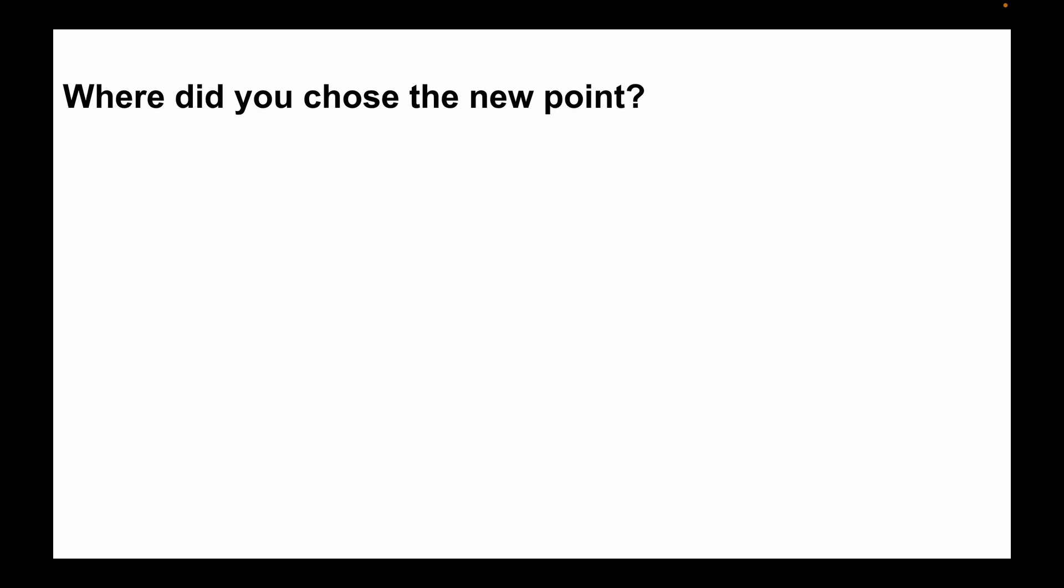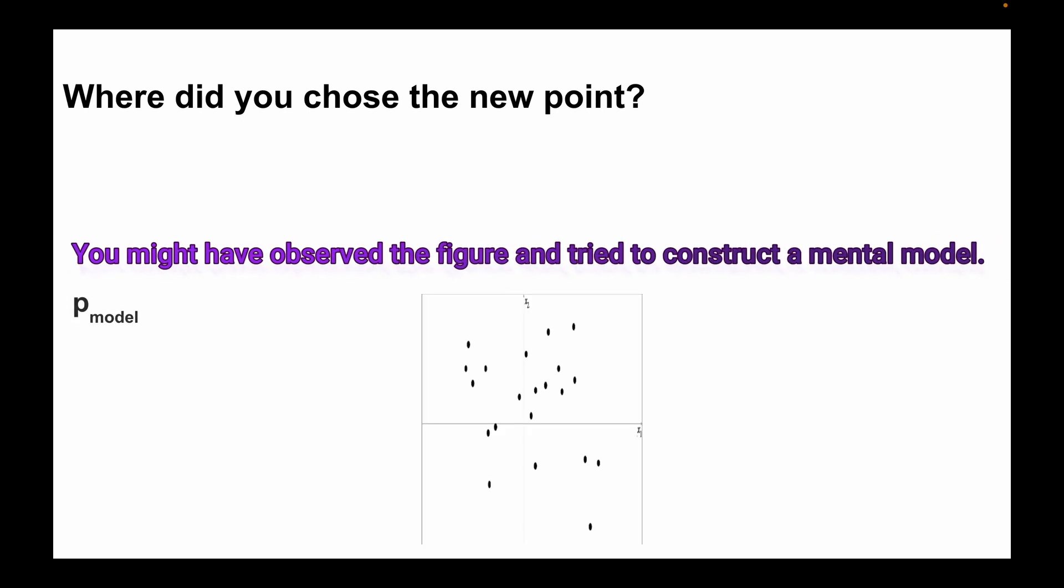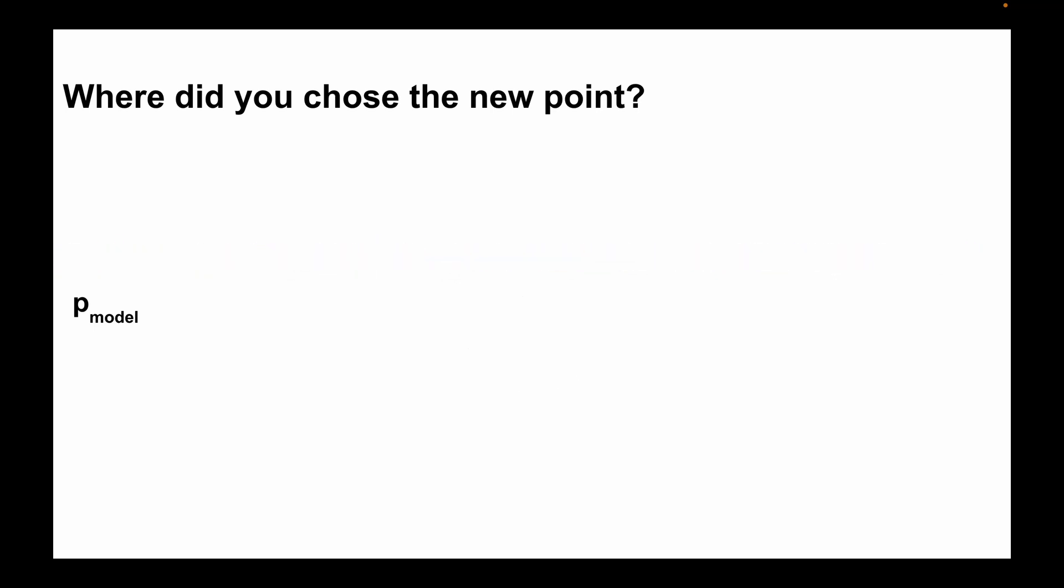So where did you choose your new point? You might have observed this particular figure and tried to construct a mental model of that figure. Let's call this model pmodel. Your mentally constructed pmodel is an estimate of the input data distribution, that is pdata.